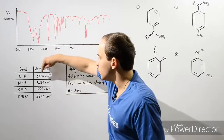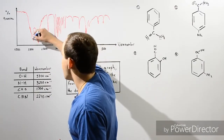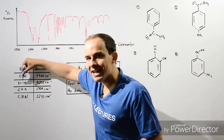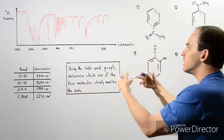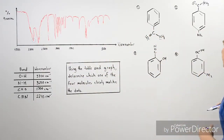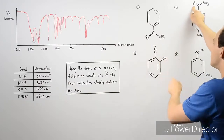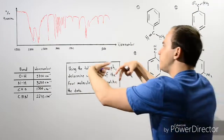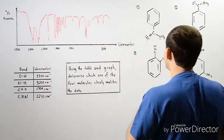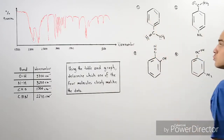Because the OH and NH wave numbers are so close, we cannot use these values to differentiate which molecule corresponds to this graph. Looking at this region on the graph, we see it corresponds to a wave number close to that value, so the dip can be either OH or NH — meaning any one of these molecules could have this dip. Moving to the next bond type: molecules 1 and 2 have the C double bond to O, while molecules 3 and 4 do not.